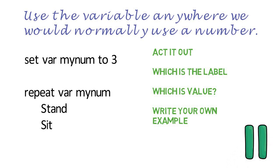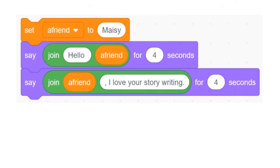Let us look at some examples within the scratch and crumble programming language. The first line assigns the value Maisie to the label a friend. The second two lines reads the labels a friend and displays the values. Write down on your whiteboard what you think this would display.